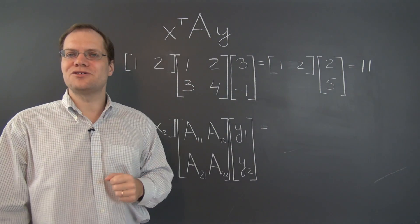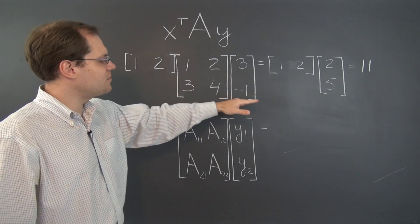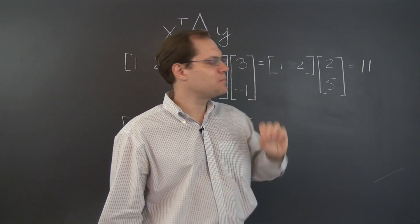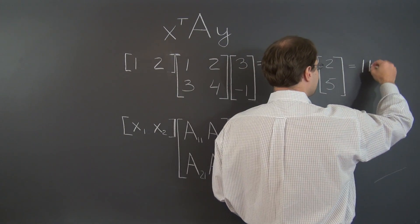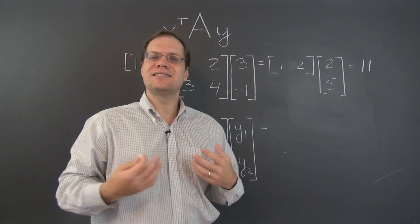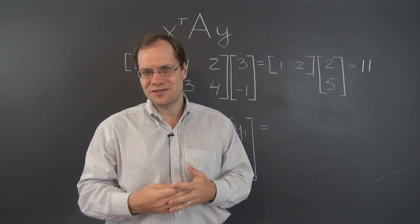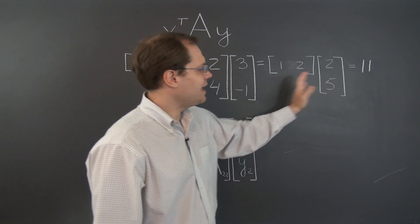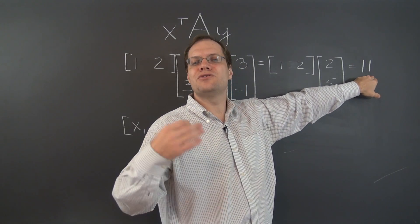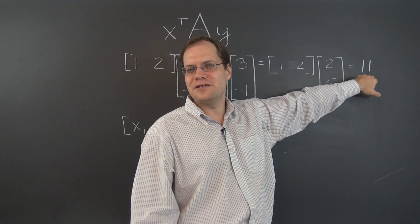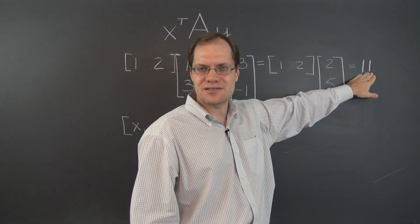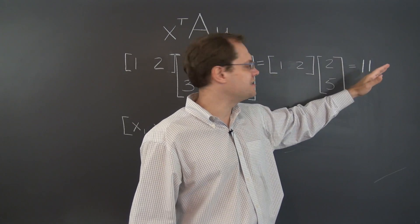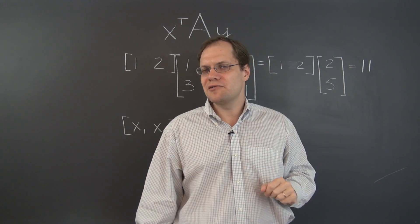The important thing to realize is that the outcome of this product is always a one-by-one matrix. It would have been a little bit more proper to put square parentheses around it, because the result is not a number — it's technically a one-by-one matrix. But we'll routinely identify one-by-one matrices with simple numbers. A one-by-one matrix has only one piece of information in it, a single entry, so we can also think of it as a number.